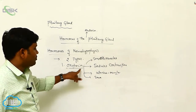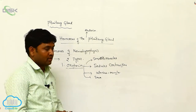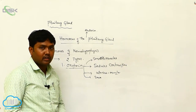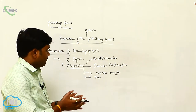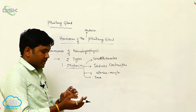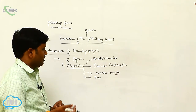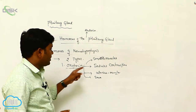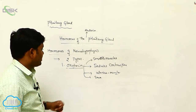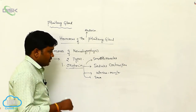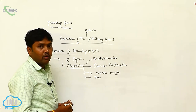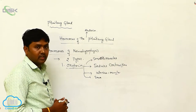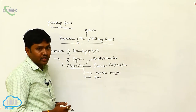Oxytocin induces the contractions during delivery or childbirth — the uterine muscles are enlarged, and by this way the child will come out from the vagina. Oxytocin works at smooth muscle sites, and also after childbirth, the ejection of milk from the mammary glands is helped by the secretion of oxytocin.